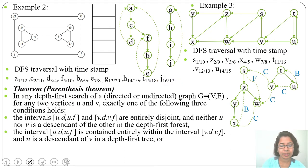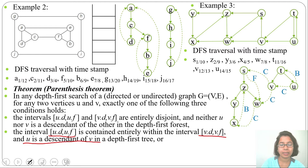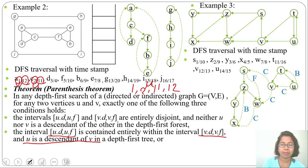Next condition: the interval [U.D, U.F] is contained entirely within the interval [V.D, V.F], meaning U's discovery time and finishing time are within V's discovery time and finishing time. Then U is a descendant of V in the depth first tree. Let C be our U and A be our V. C's discovery time 2 is within 1, and C's finishing time 11 is within 12 — so we write 1, 2, 11, 12 — meaning C is a descendant of A.